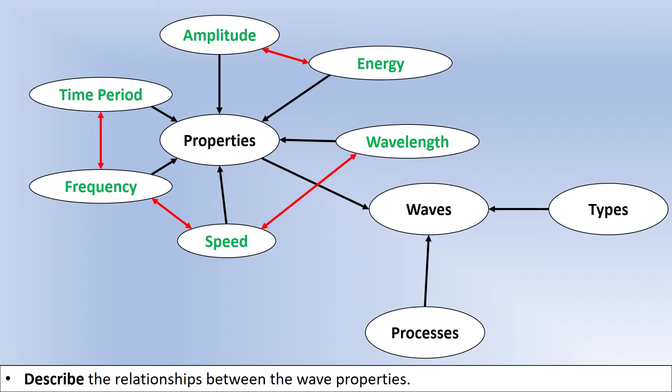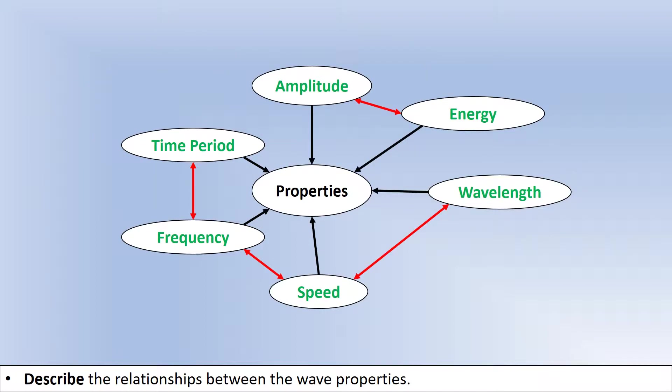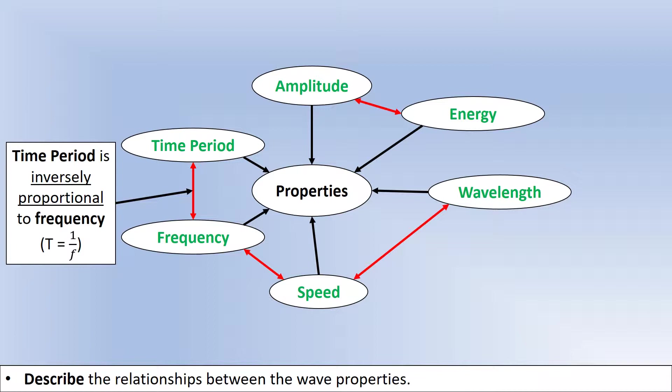Now let's explore the relationships between these different properties. These are all things that have been determined experimentally. The first relationship links time period and frequency. What you find is that time period is inversely proportional to frequency, with a constant of proportionality of one. So we get the equation: time period equals one over frequency, or the reciprocal of frequency.